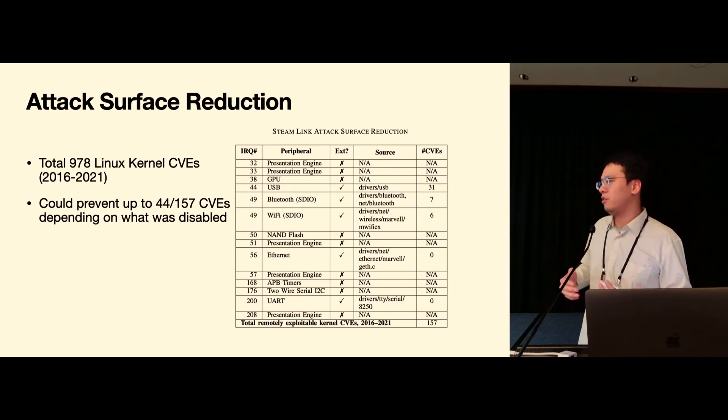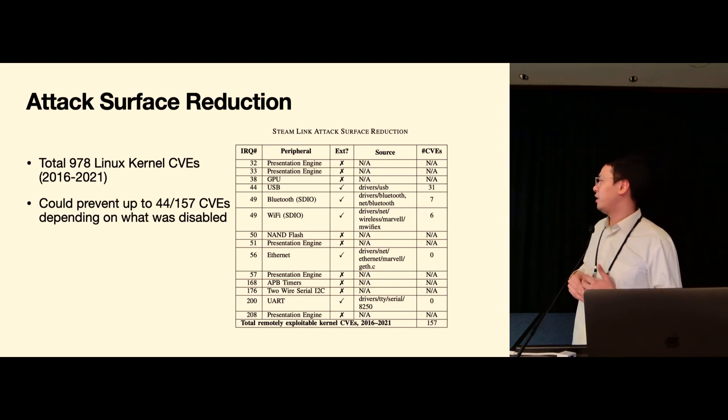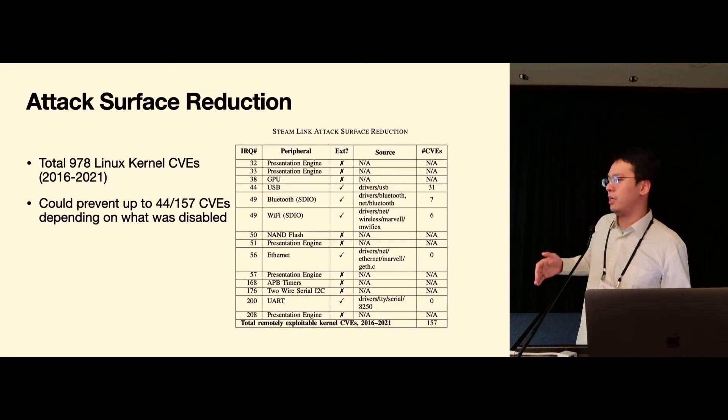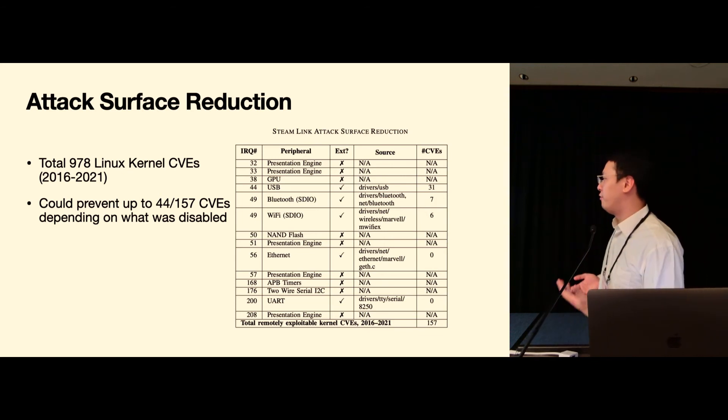Among them we ended up with 157 in total which are remotely exploitable CVEs. And here we show that by turning off each single one of the interrupt handlers, we can prevent in total 31 CVEs that is in the USB subsystem, and we can also prevent seven CVEs related to the Bluetooth device and also six related to the Wi-Fi device, which ended up 44 in total.